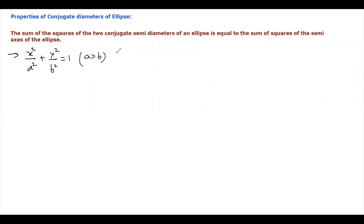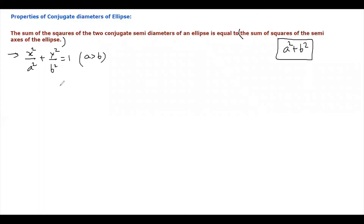What we have to prove is that the sum of squares of two conjugate semi-diameters of an ellipse equals the sum of squares of the semi-axes. That means a² + b² is the answer we must prove. Since a is the semi x-axis and b is the semi y-axis, on the x-axis half the length is a and on the y-axis half the length is b. So a² + b² is the value we have to prove.